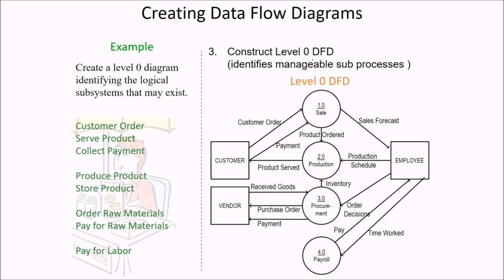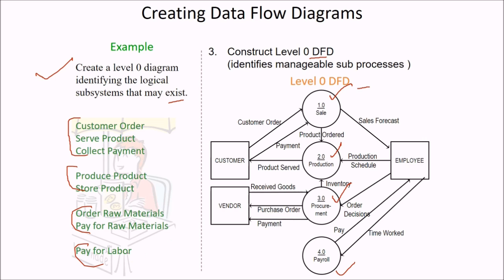Then we construct the level 0 DFD — we identify manageable sub-processes. We create a level 0 DFD identifying the logical subsystems that may exist. The logical subsystems are: sale, production, procurement, and payroll. Pay for labor will be in payroll. Procurement will handle order raw materials and pay raw materials. Production and storage will be in production. Customer order, serve product, and collect payment will be in sale.